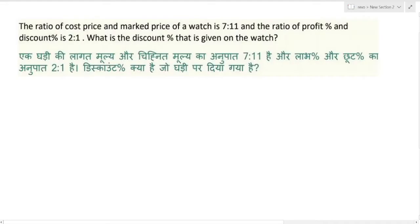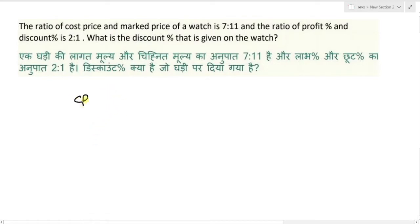The ratio of cost price and mark price of a watch is 7:11, and the ratio of profit percentage and discount percentage is 2:1. What is the discount percentage given on the watch? Question में क्या given है — cost price और mark price का ratio given है 7:11.